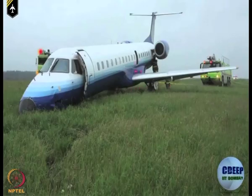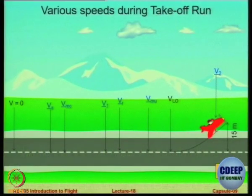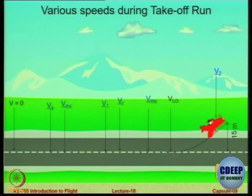In case you experience any serious malfunction after V1, you would have to commit yourself to continuing the takeoff; otherwise, a takeoff abort will lead to a runway overrun. Do you understand now why it is called decision speed? During takeoff, if any malfunction or engine failure is observed before V1, what is your decision — what would you do as a pilot?